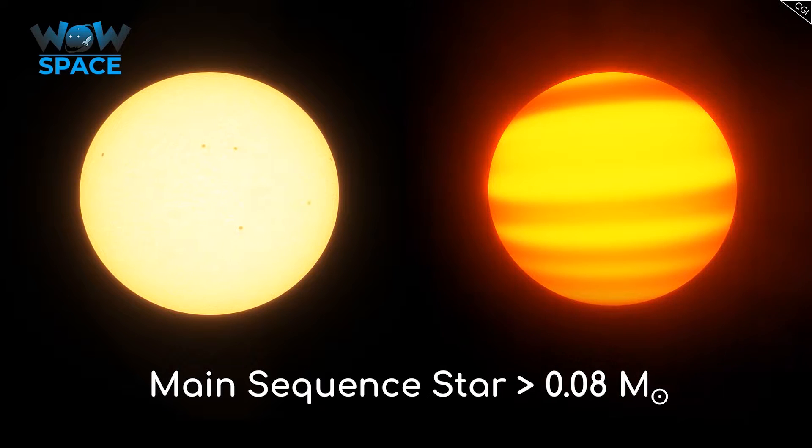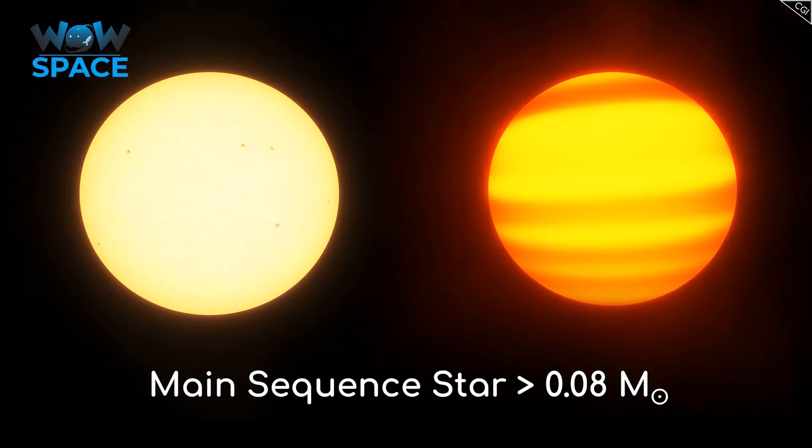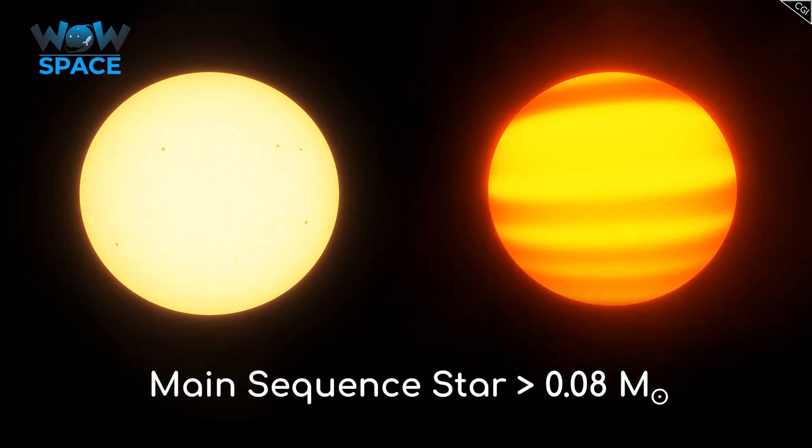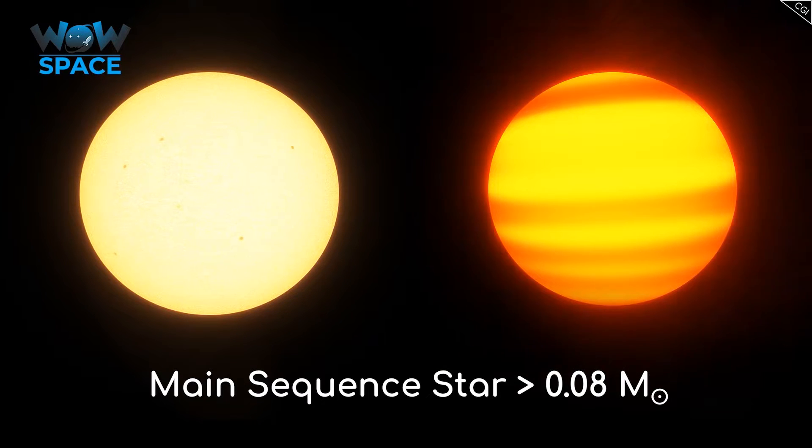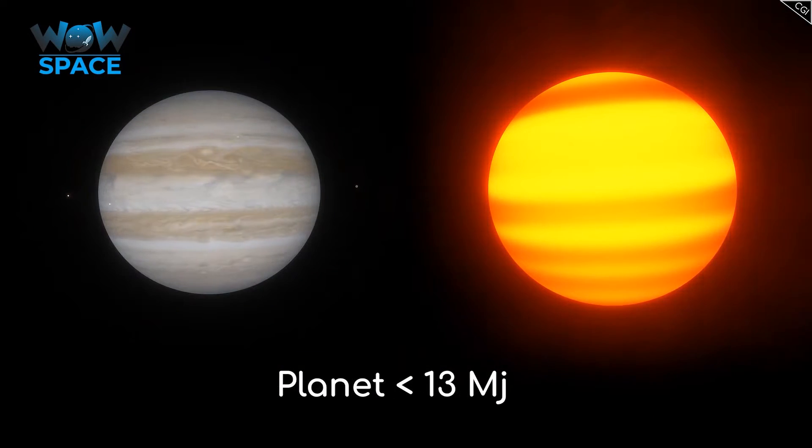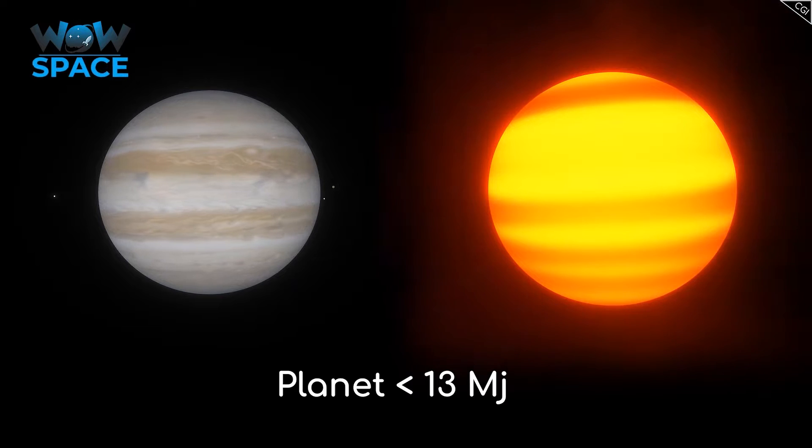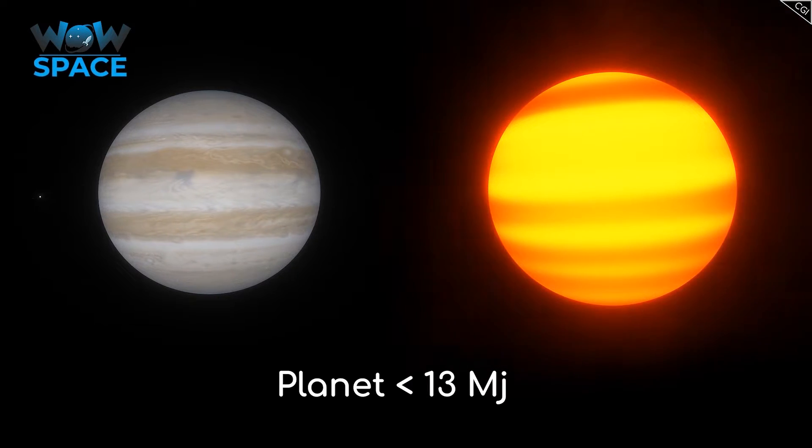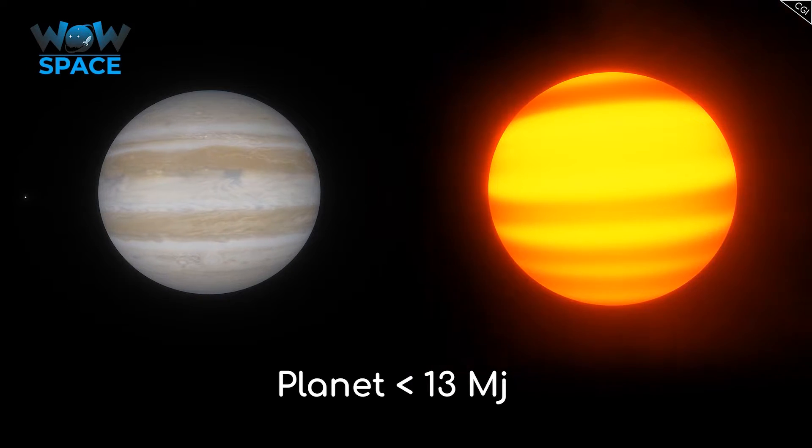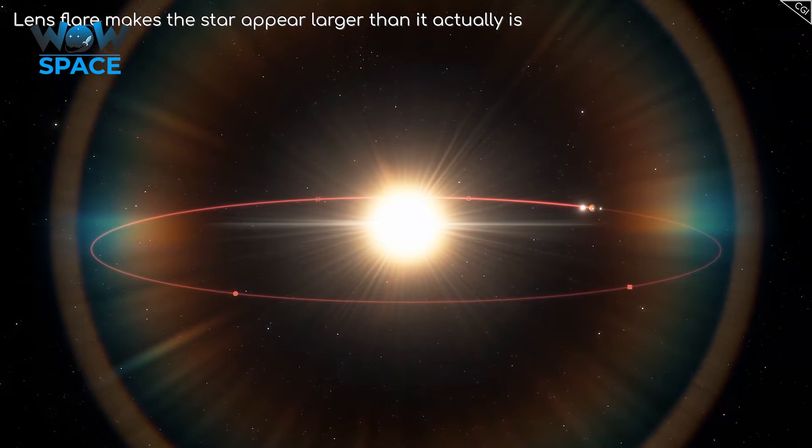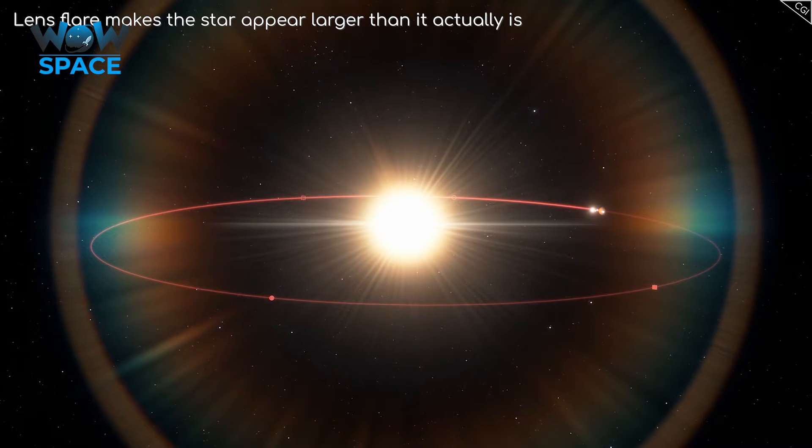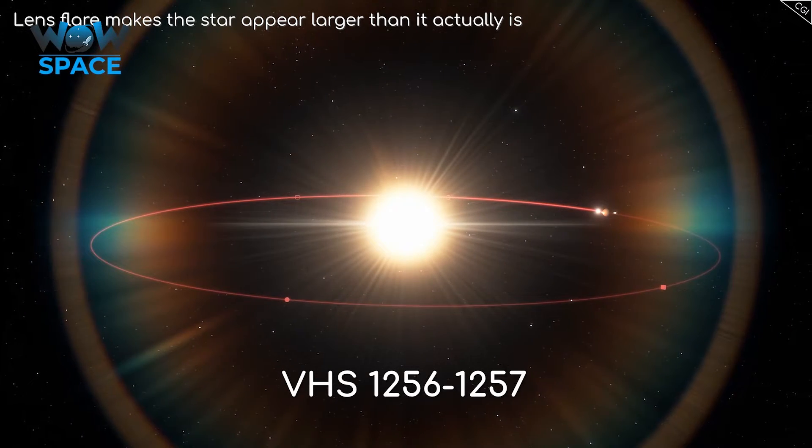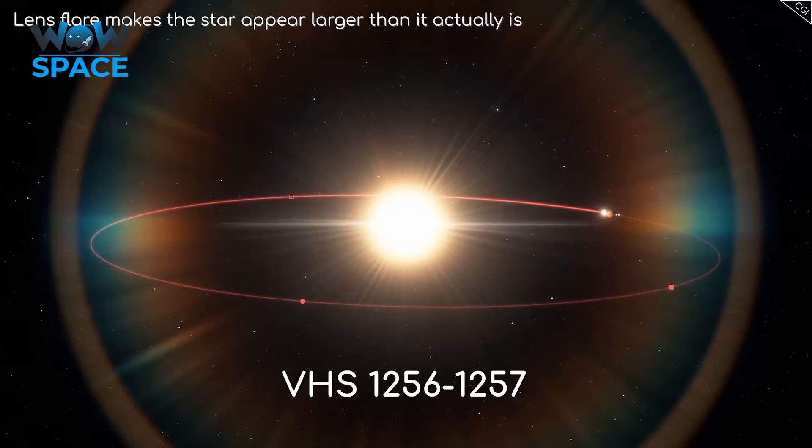Remember, the difference between a brown dwarf and a main sequence star is whether nuclear fusion takes place in the star's core, which we believe happens above 0.08 solar masses. And we also believe the dividing line between a planet and a brown dwarf is around 13 Jupiter masses. So, one of our best bets to find a tiny star with a large planet is looking around the red dwarf VHS 1256-1257.